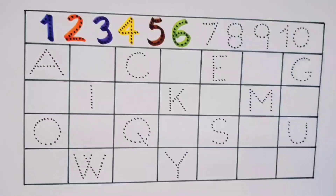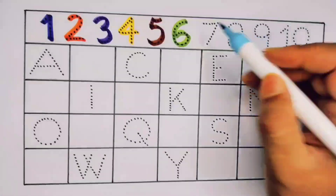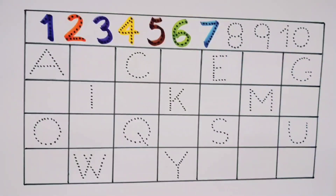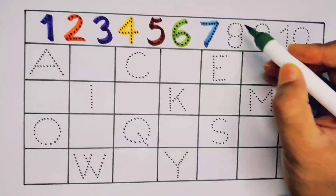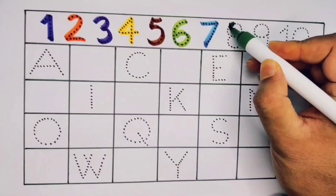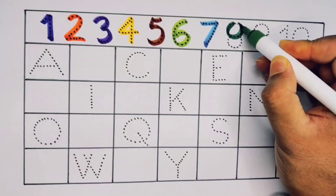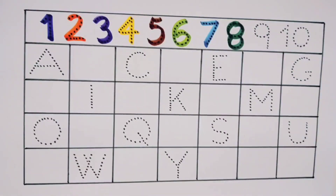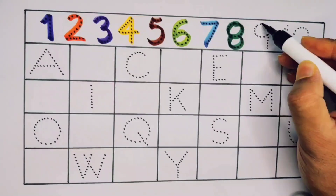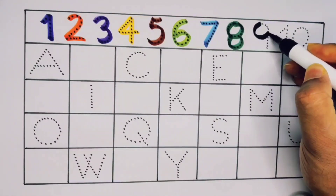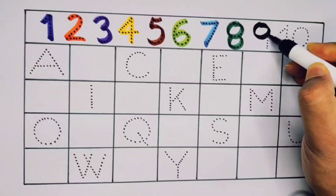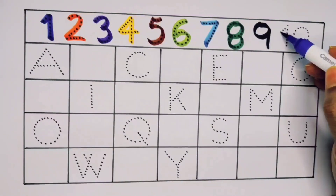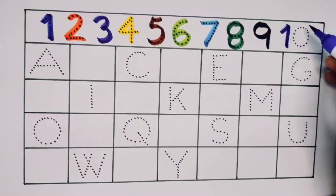What will next, kids? It's number six. Next, it's number seven. What will next, kids? It's number eight. Next, kids, it's number nine. Next, it's number ten — one, zero, ten.